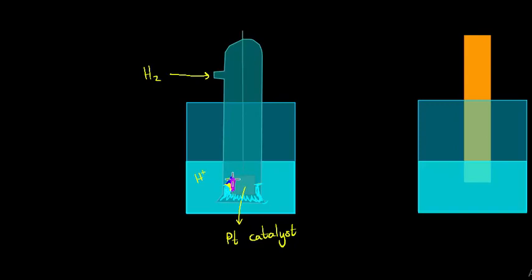At this contact point, assisted by the platinum catalyst, there is a pull on the hydrogen gas to get electrons from the system. If it can successfully gain electrons, it starts producing little bubbles of hydrogen gas at the electrode. But it can't do this alone — it needs an external source of electrons.